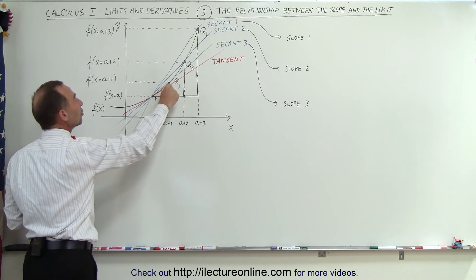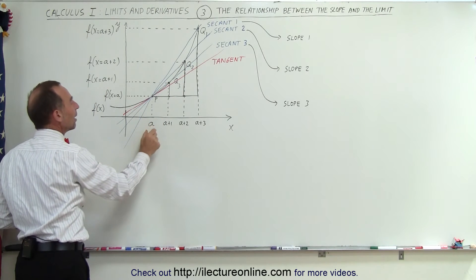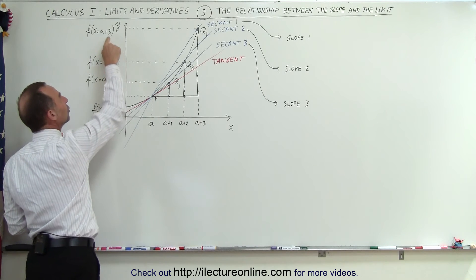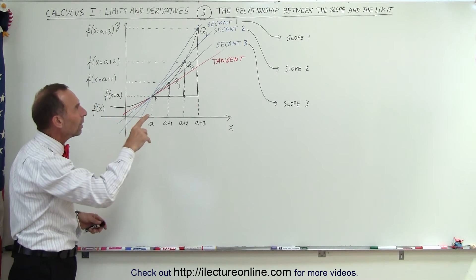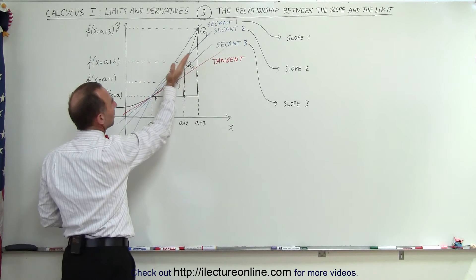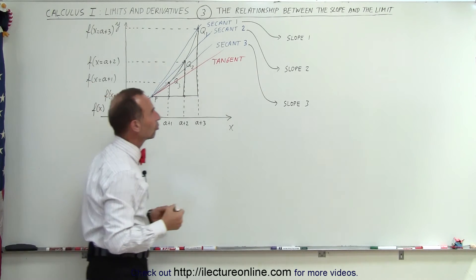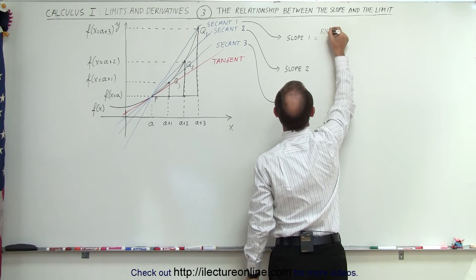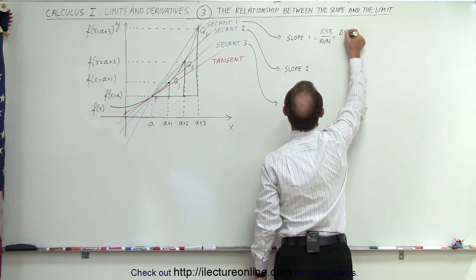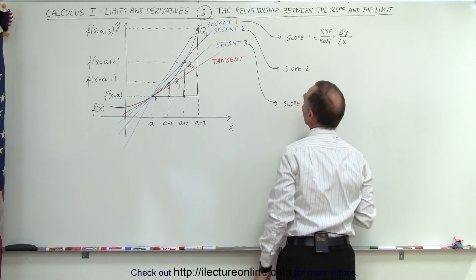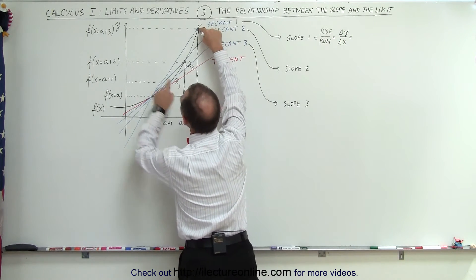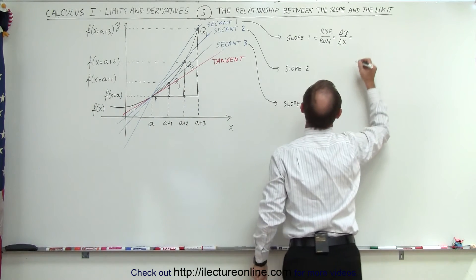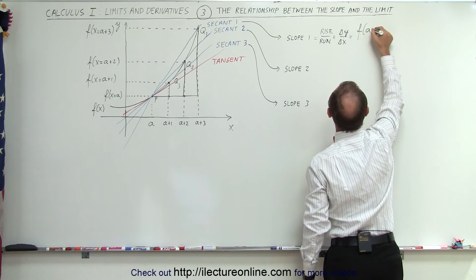Also, the vertical position of P, Q3, Q2, and Q1 can be found by plugging the x-values into the function, to get the function evaluated at A, at A plus 1, at A plus 2, and at A plus 3. So what is the slope of secant line 1 — the line that has the greatest difference in slope from the tangent line? The slope is going to be equal to the rise over the run, which is the change in y-values divided by the change in x-values. The change in y-values will be equal to the function evaluated at A plus 3, minus the function evaluated at A.